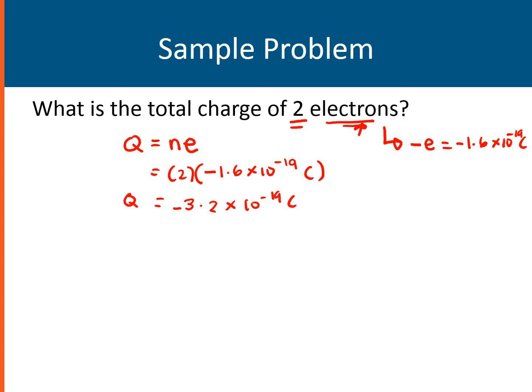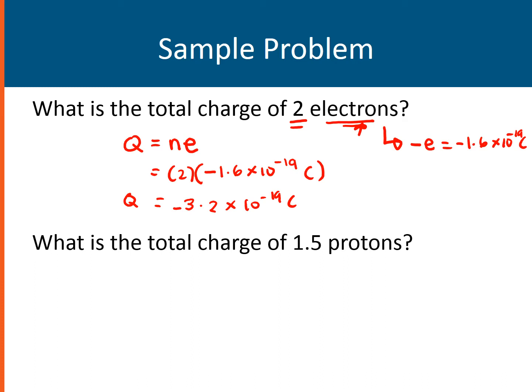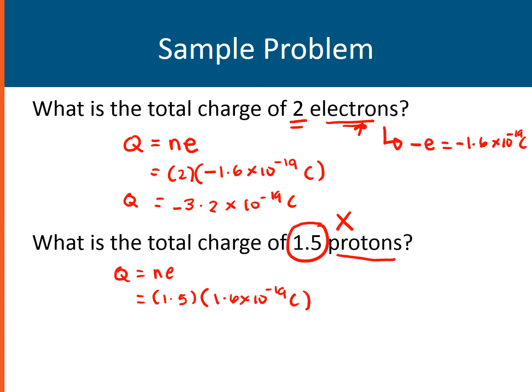Here is another question: what is the total charge of 1.5 protons? You might be tempted to use the equation Q = nE where N would be 1.5 and E would be 1.6 times 10 to the negative 19 Coulomb because it is a proton. But remember, as we mentioned earlier, charges or elementary charges should come in discrete quantities — they should come in whole numbers. Therefore, this question would be invalid because we cannot have 1.5 of a proton. This question is invalid or erroneous.